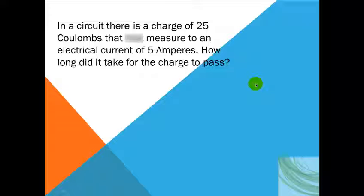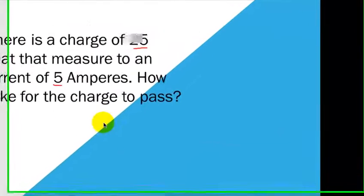Here's the final equation that we will solve. In a circuit, there is a charge of 25 coulombs that measure to an electrical current of 5 amperes. How long did it take for the charge to pass? I want you to notice that this time we are not trying to solve current. We are trying to solve the time. So in this case, you might want to refer to your pyramid. If you don't have it with you, or if you don't remember, you could go back in the video. So here would be the q. And then the i and the t would be at the bottom.